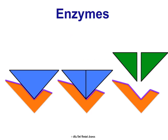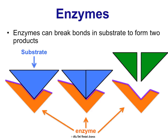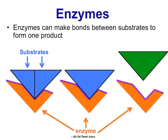Let's look at examples of this in a reaction. Sometimes enzymes assist in breaking bonds — the enzyme binds one substrate, some bonds are broken, and at the end the enzyme is unchanged but two products are released. Enzymes can also assist in making bonds — the enzyme binds two substrates, bonds form, and one product is released.